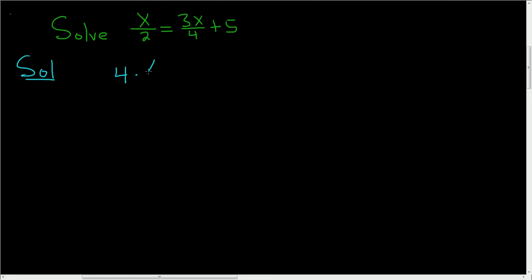So you have 4 times x over 2 equals 4 times parentheses 3x over 4 plus 5. On the left-hand side, 2 goes into 4 two times. So we're left with 2x.